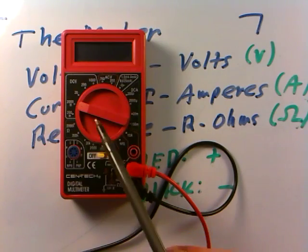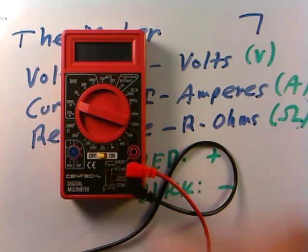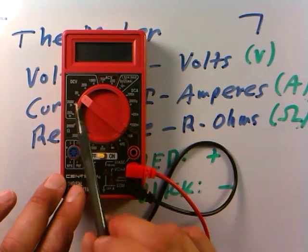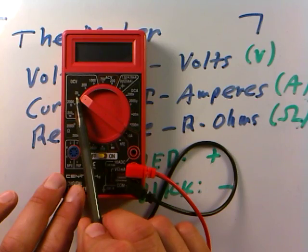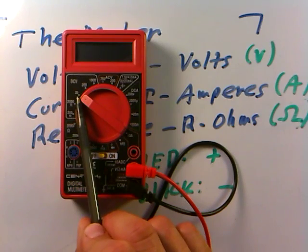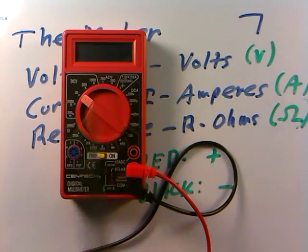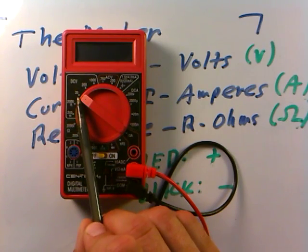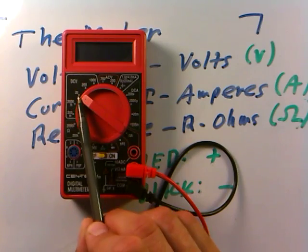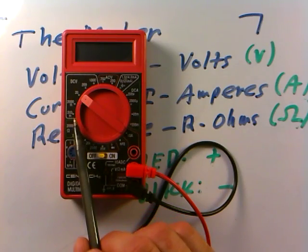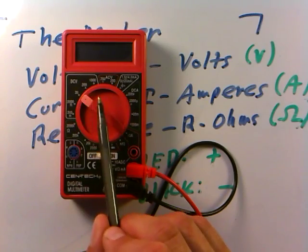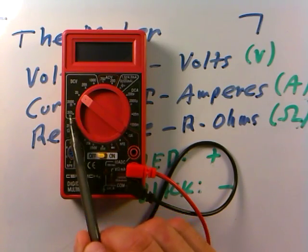The reason why there are different scales on here is because if you put the knob right here on the 20 volt scale, that means the meter is currently set to measure a maximum of 20 volts. But you don't always want to be on a 20 volt scale if you're only trying to measure something very small, like thousands of a volt or half a volt.